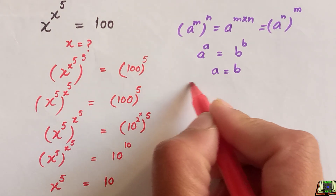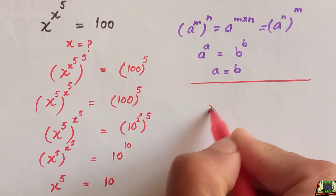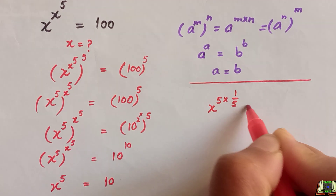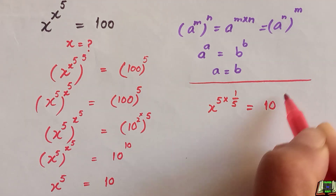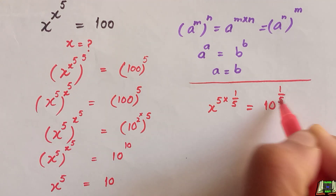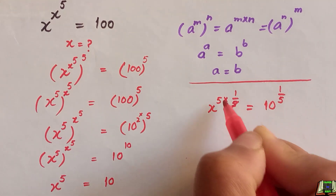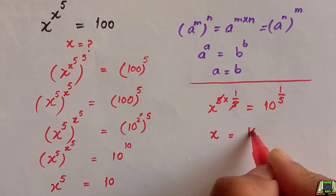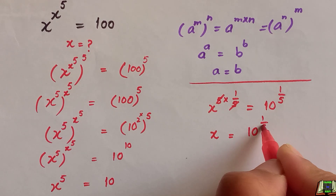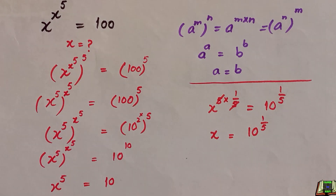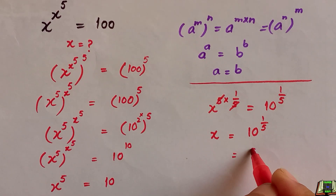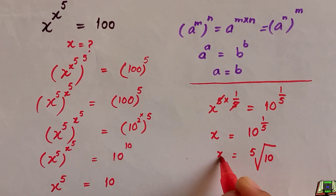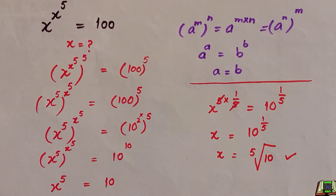To find the value of x, we raise both sides to the power 1 over 5. So x to the power 5 times 1 over 5 equals 10 to the power 1 over 5. The 5s cancel on the left, leaving us with x equals 10 to the power 1 over 5, which we can also write as the fifth root of 10.